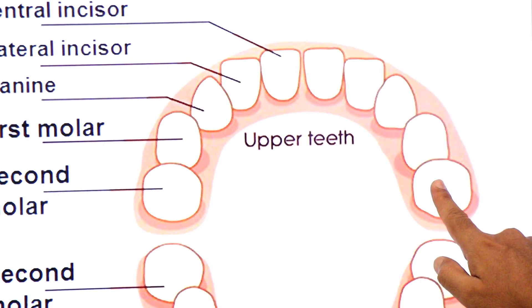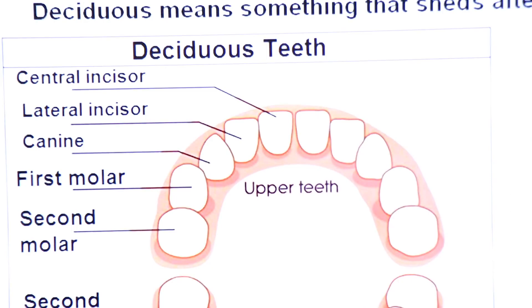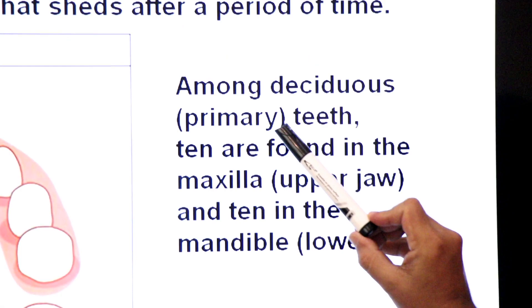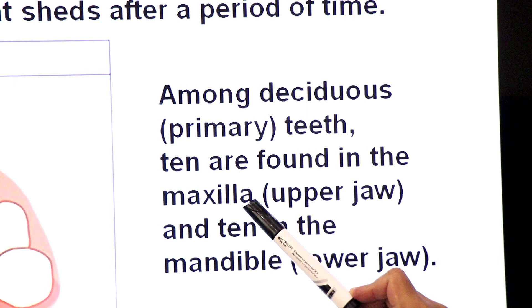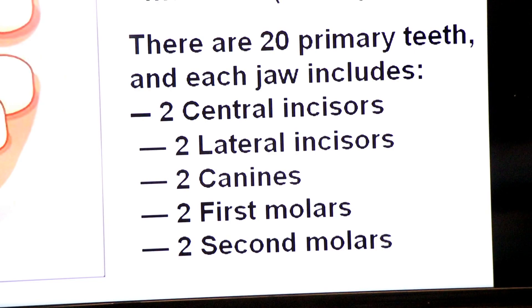There are 20 primary teeth: 10 are present in the upper jaw as maxillary teeth, and 10 are present in the lower jaw as mandibular teeth. So among the deciduous primary teeth, 10 are maxillary and 10 are mandibular, making 20 teeth total.